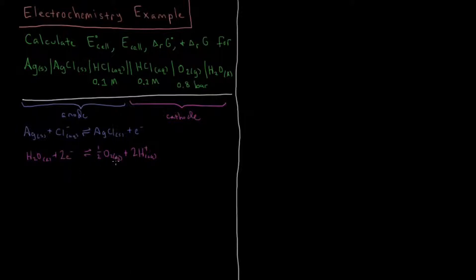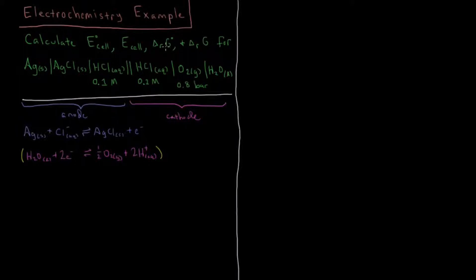We want to make sure these reactions are balanced with proper stoichiometric coefficients. We have a somewhat ugly one-half coefficient. I could multiply the top reaction by two to get two electrons on each side, but I want a full O₂ equivalent. So I'm going to multiply the bottom by two and the top by four. That will just have the effect of doubling our standard Gibbs energy and Gibbs energy of reaction, since we have twice as many moles.